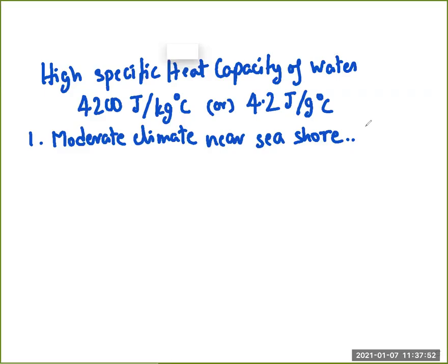This video addresses the last couple of sections of the chapter on calorimetry, dealing with the high specific heat capacity of water — around 4200 joules per kilogram degree celsius — and its consequences in terms of phenomena around us and how we utilize it to our own advantage. I'll discuss two or three examples.